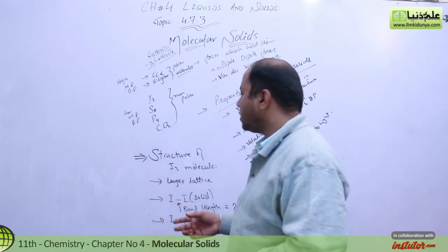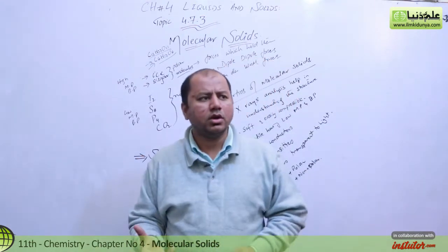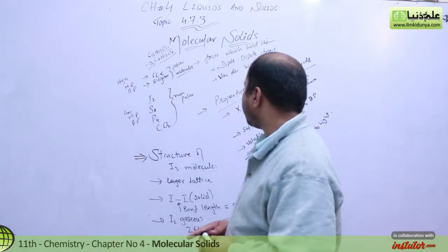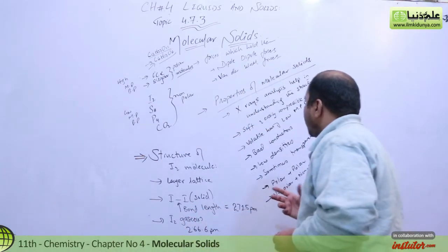Monoclinic crystals related to sulfur have been discussed, phosphorus molecules, and also carbon dioxide which exists in molecular form, which is present in air as a gas. Students, let's talk about properties.